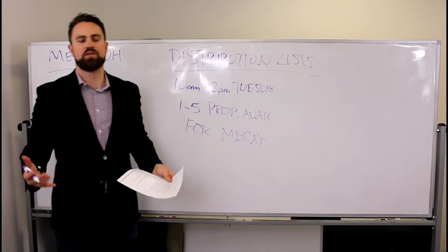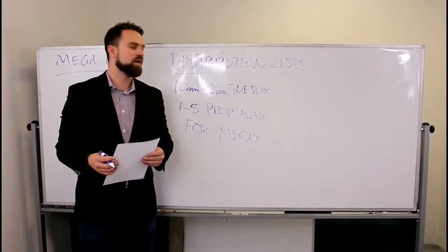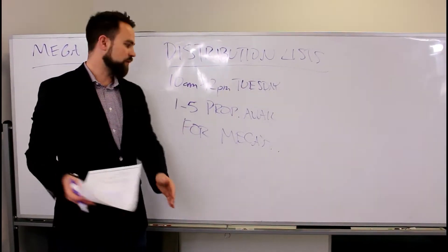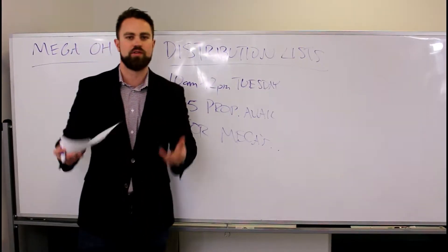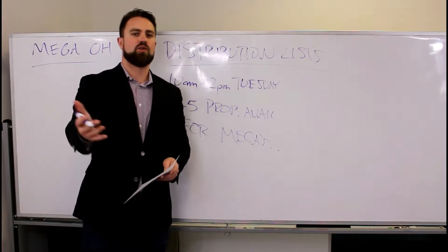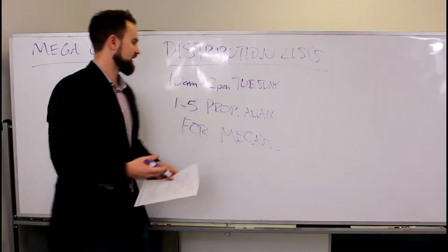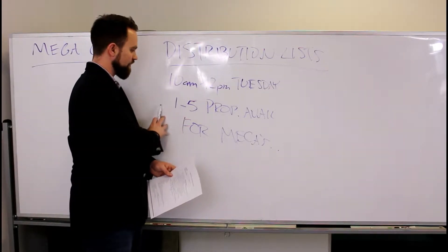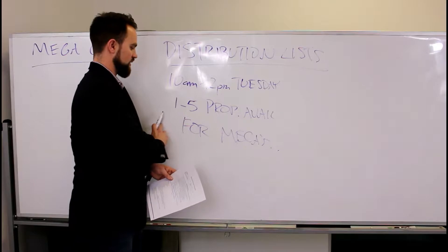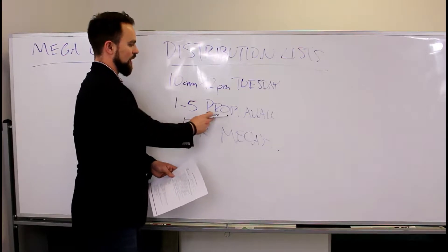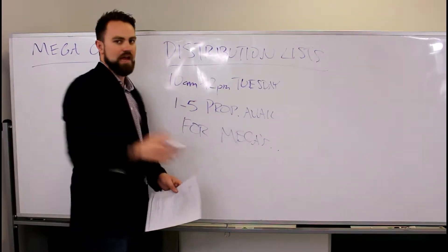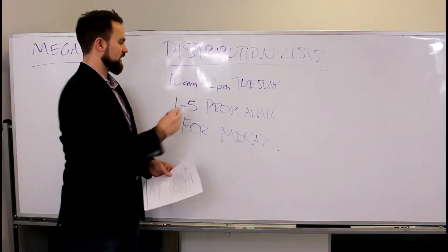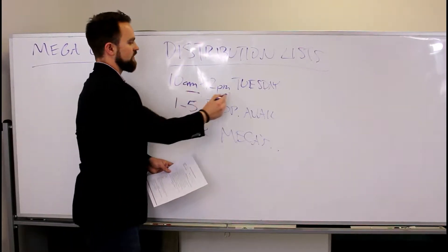During team meetings we announce properties that are coming up, and we'll reach out to a handful of people we want to assign to megas. If you're interested in doing a mega open house, come talk to myself or Paul Burke to get this lined up. Usually right around after a team meeting, around 12 to 12:30, we'll hand-select the one to five properties designated for megas. Everything else goes to the open house distribution list, sent out by Sara, usually around 10 to 12 p.m.